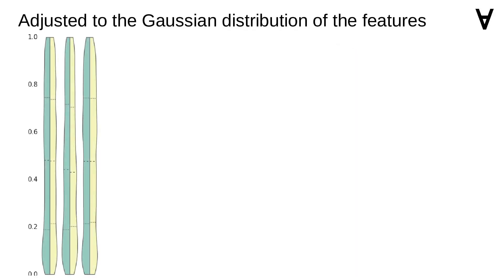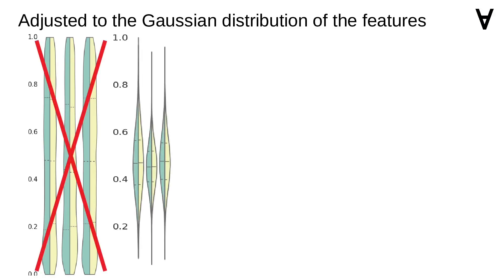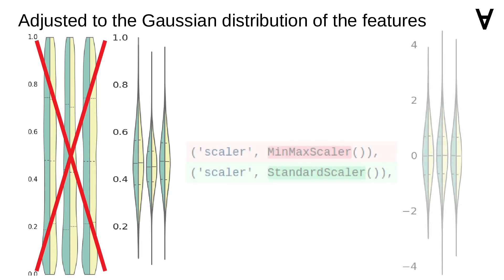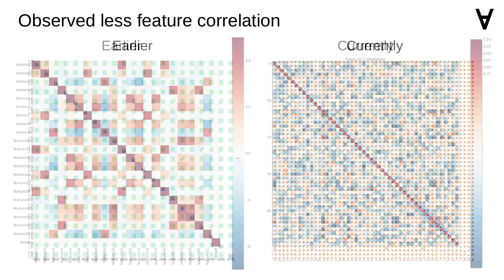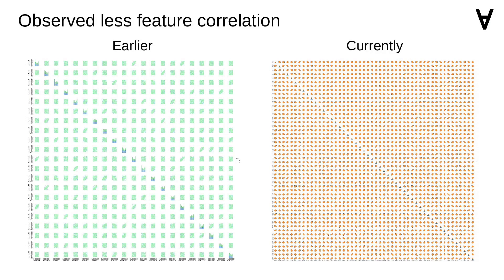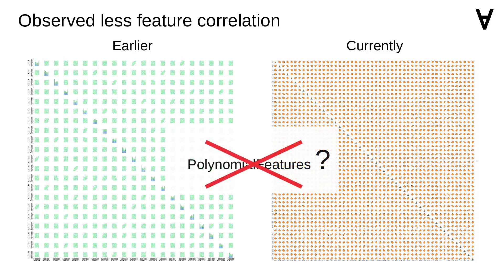One observation I made was that earlier the features had uniform distributions, but currently the distributions were Gaussian. Since among the models there are ones using neural networks, I decided to normalize the features using standard scaler instead of min-max scaler, though I realize that choice may be misguided. I also noticed that currently there appears to be less correlation between features — this is perhaps more apparent on a pair plot, though due to the number of features it may not be visible very well. Therefore, it could possibly make sense to omit using polynomial features in the code; however, I have not tested that idea.